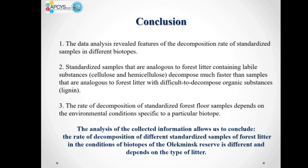Conclusions: First, our study data shows the decomposition rate structure in different biotopes. Second, standardized samples that are analogues to leaf litter containing labile substances — cellulose and hemicellulose — decompose much faster than samples that are analogues to forest litter with difficult-to-decompose organic substances such as lignin. Third, the leaf litter decomposition rate of standardized forest litter samples depends on the environmental conditions specific to a particular biotope. All in all, the leaf litter decomposition rate of different standardized samples in the Alekminski Nature Reserve is different and depends on the type of litter as well as on the biotope type.